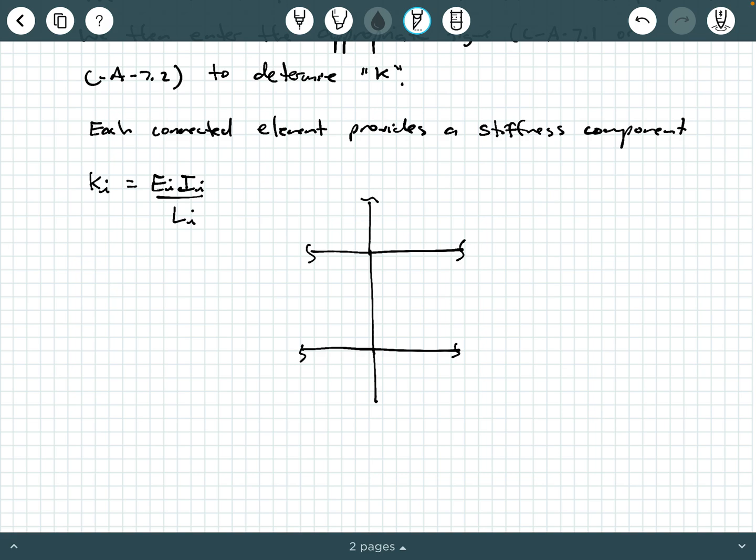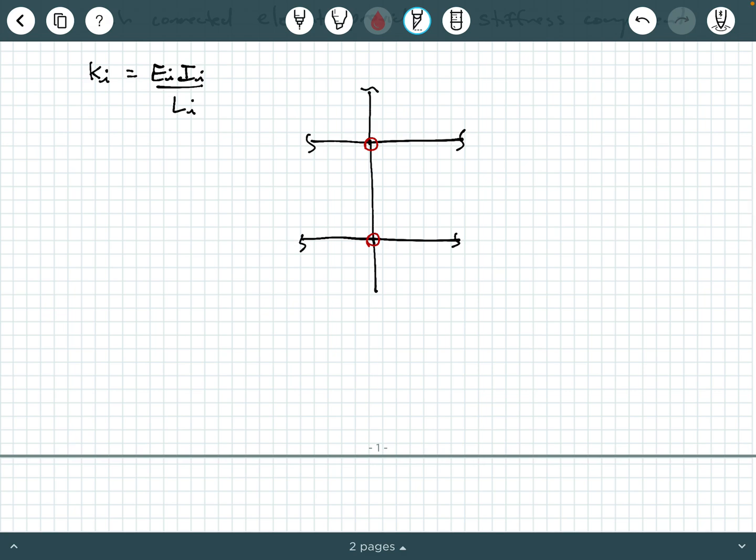Well, what happens is we look at the member ends. We look at these two member ends. And then what we are investigating is how all of these other members that are attached to the ends of the member that we're interested in, how are they providing stiffness to this member. So each of these attached members are providing some stiffness component that is a function of modulus of elasticity, moment of inertia, and the length of the attached members. And so that's the basic idea of this.